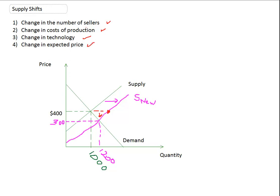So hopefully it's pretty clear. More sellers, supply goes up. Lower cost of production, supply goes up. Better technology, supply goes up. Changing expected price: if I expect the price to go down in the future, I want to sell now, which causes price to go down. Supply goes up.